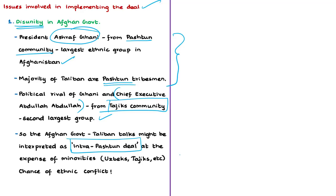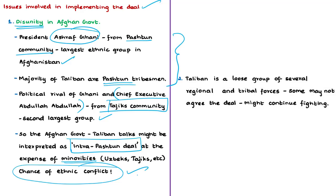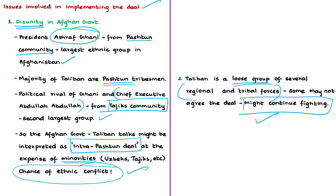Even if Ghani's government enters talks with the Taliban, Abdullah's supporters could interpret this as an intra-Pashtun deal made at the expense of other ethnic groups like Tajiks and Uzbeks, which might lead to civil war or ethnic conflict. Additionally, the Taliban is not a well-knit force — it is composed of various regional and tribal groups acting semi-autonomously. Some may not agree with this peace deal and may continue attacking government troops or even American forces during the withdrawal.